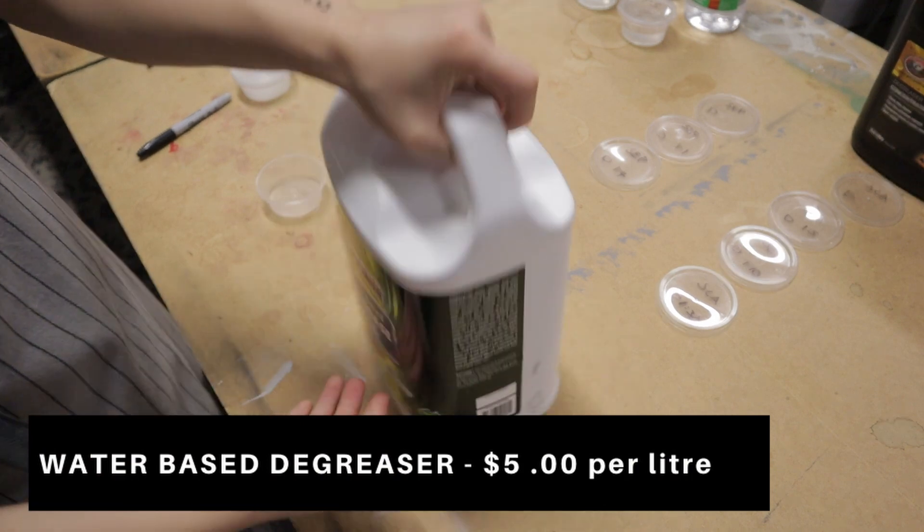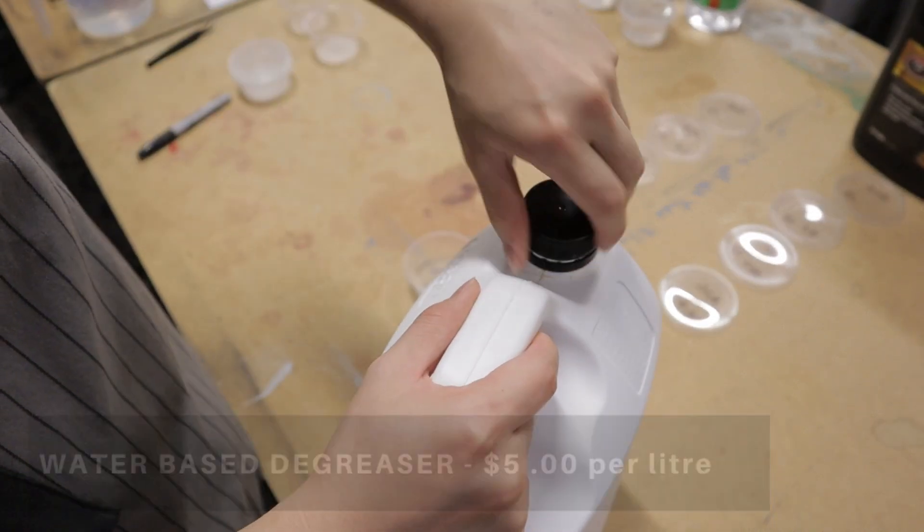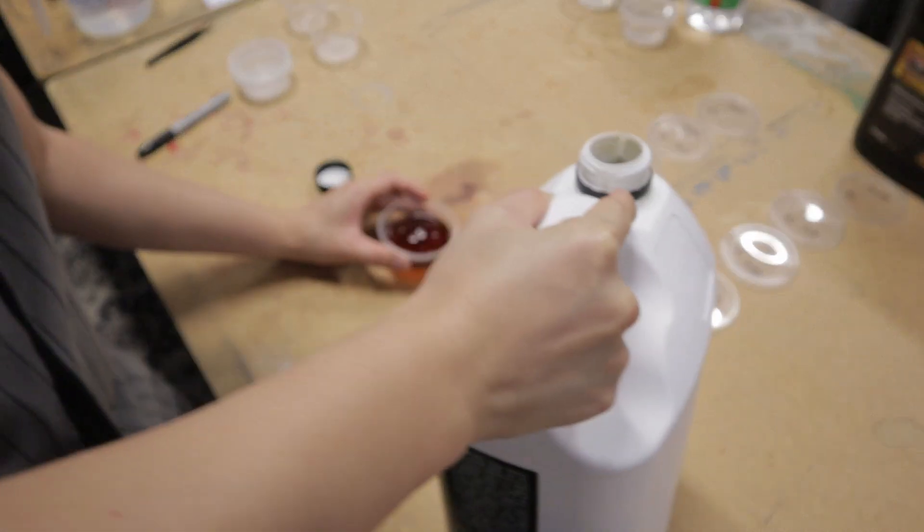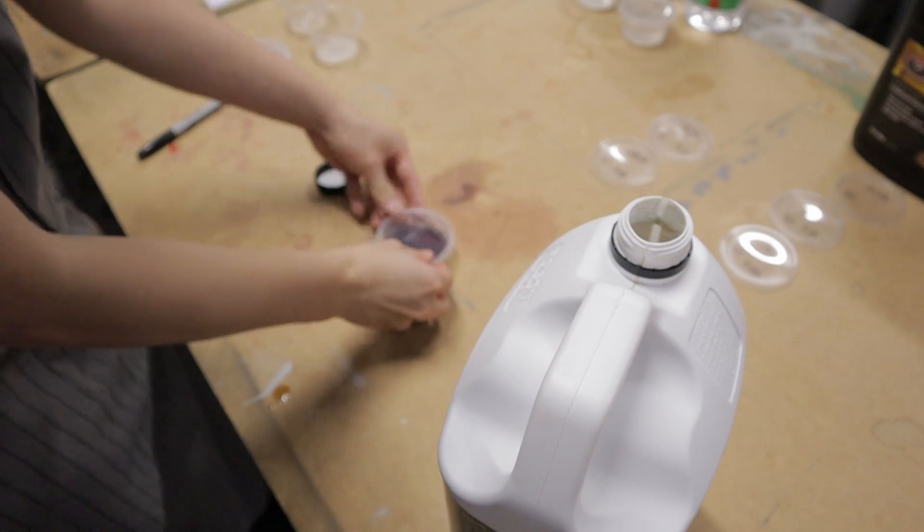For the third choice, Saptone water-based degreaser. This costs $5 per liter. And since it's pretty heavy duty stuff, I'm going to dilute separate batches to see how it affects the cleaner.